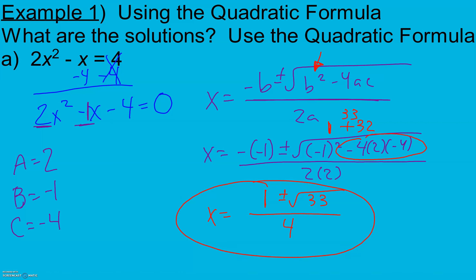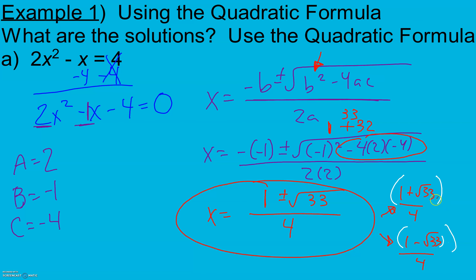We can get decimal approximations: one solution is 1 plus the square root of 33, divided by 4; the other is 1 minus the square root of 33, divided by 4. If you type this into your calculator all at once, you'll need parentheses. But I'm looking for the exact answer unless we're applying it to something. Keep in mind, the plus or minus means we have two different answers.